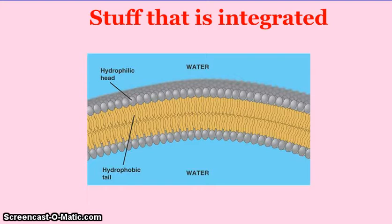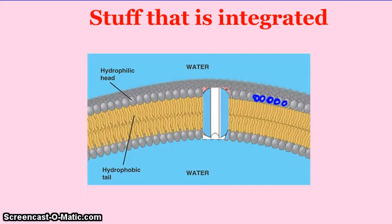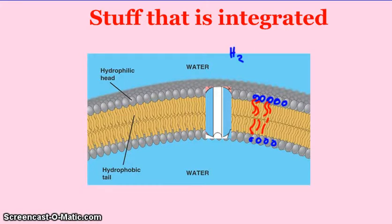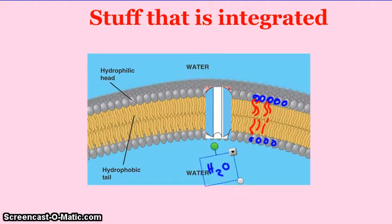That brings us to a discussion of things that are integrated into the cell membrane — integrated meaning they are part of the cell membrane. First of all, we have things called protein channels. Protein channels are structures that the cell builds and then embeds or integrates into the phospholipid bilayer. The cell embeds these into the membrane, and they provide a tube that molecules can move through — like H2O. H2O is unable to pass through the membrane on its own, but it can pass through one of these protein channel structures and move into or out of the cell.